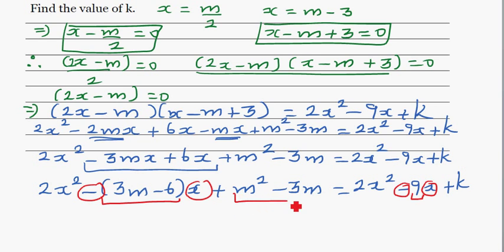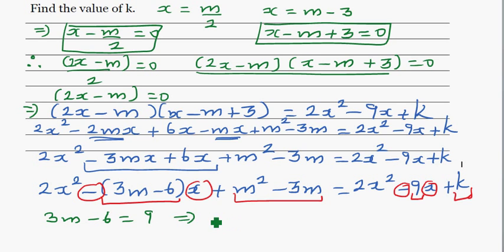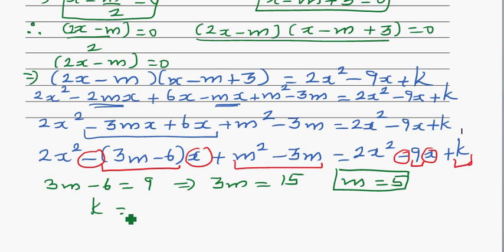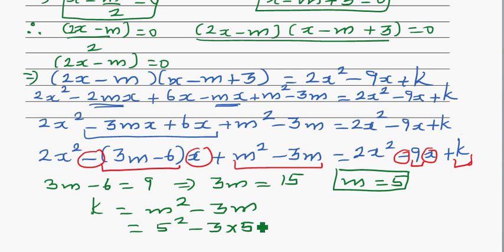Comparing the constant terms, m squared minus 3m should equal k. From 3m minus 6 equals 9, we get 3m equals 15, so m equals 5. With m equal to 5, we can find k. k equals m squared minus 3m, which is 5 squared minus 3 times 5, which is 25 minus 15, which equals 10. So the value of k is 10.